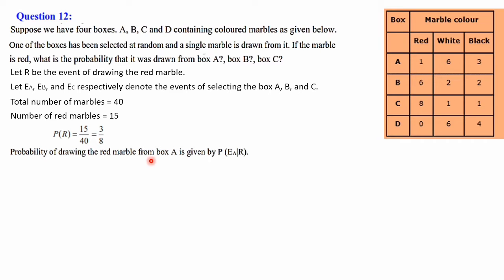Next, the probability of drawing a red ball from box A is P(Ea|R) — that is, you are selecting a ball from box A given that it is red. By using the conditional probability formula, P(A|B) = P(A∩B) / P(B), we can write this as P(Ea∩R) divided by P(R).